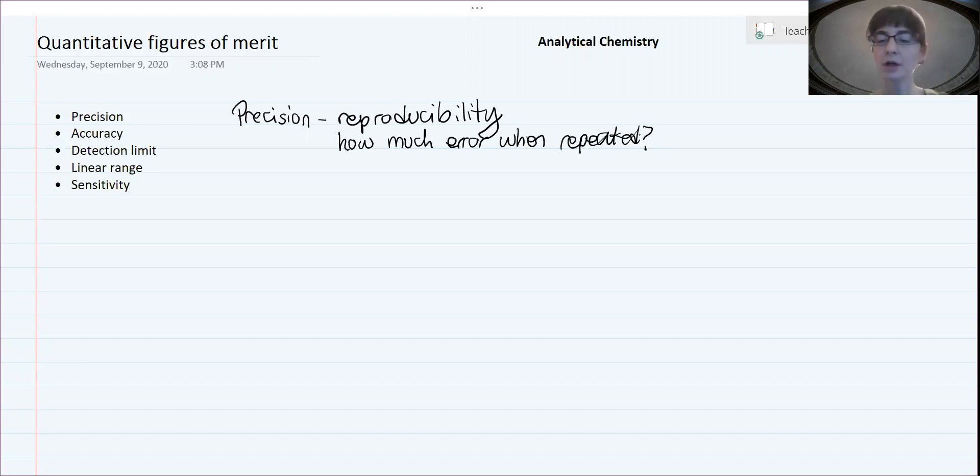It usually involves measuring the same sample repeatedly or a series of samples repeatedly. So you have to measure multiple times, usually at least three times, but often we go for more like 10 or even 20 times, so that we really have a lot of data to quantify precision.